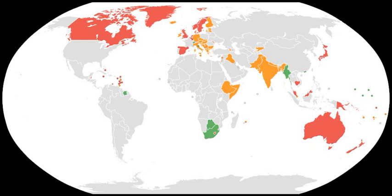Democracy and parliamentarianism became increasingly prevalent in Europe in the years after World War I, partially imposed by the democratic victors, Great Britain and France, on the defeated countries and their successors, notably Germany's Weimar Republic and the New Austrian Republic. Nineteenth-century urbanization, the Industrial Revolution and modernism had already fueled the political left's struggle for democracy and parliamentarianism. In the radicalized times at the end of World War I, democratic reforms were often seen as a means to counter popular revolutionary currents.